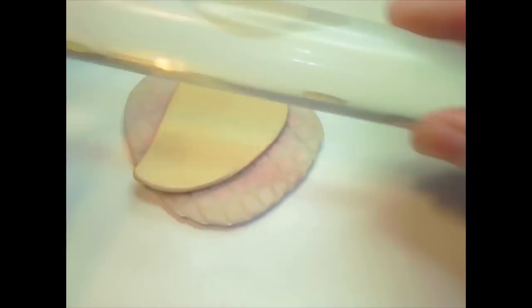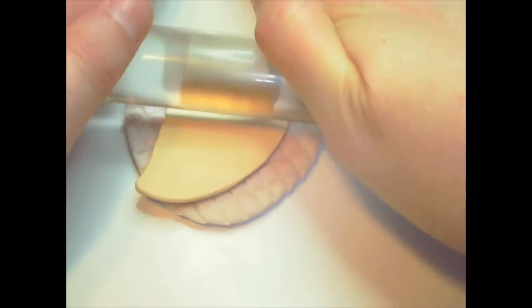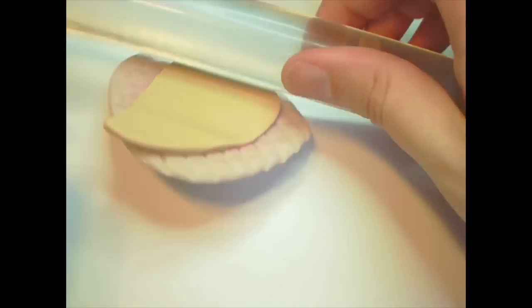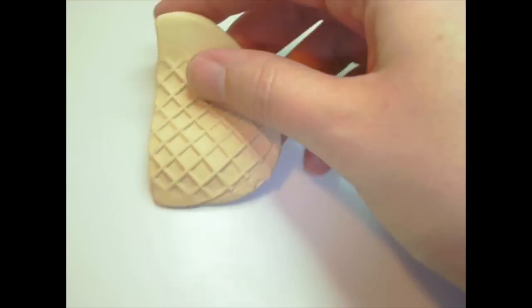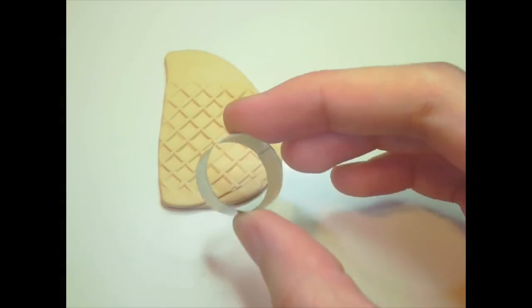You can make a waffle texture plate and roll the clay with a rolling pin. And then just use a circle cutter to cut out the size of the cookie that you want to use.